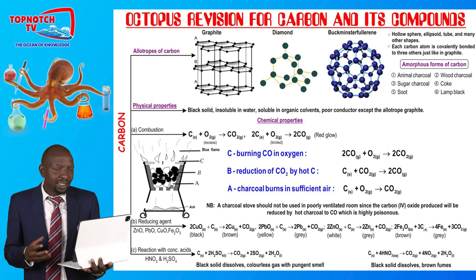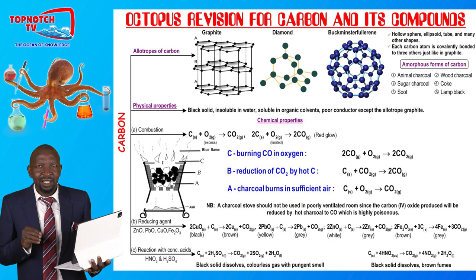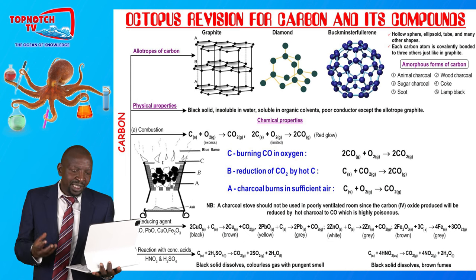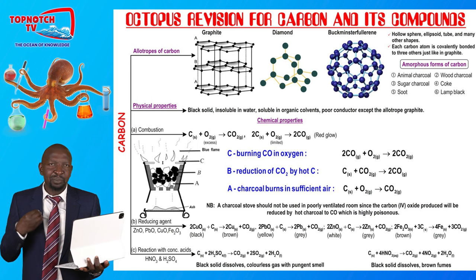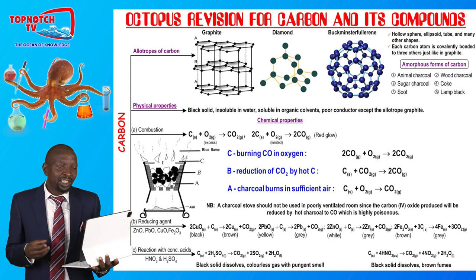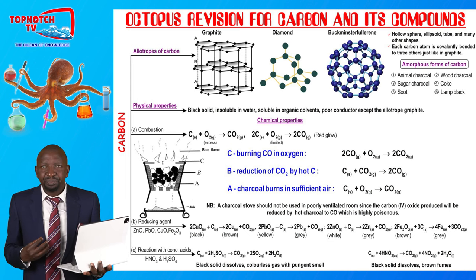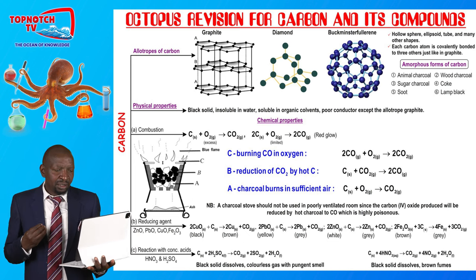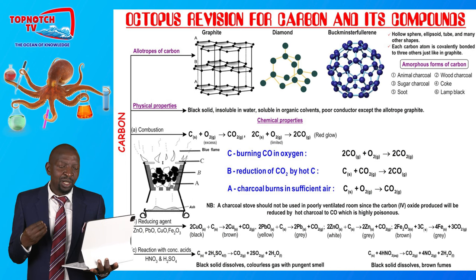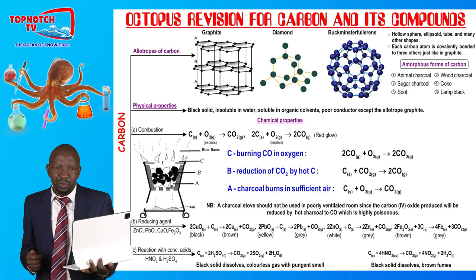The third allotrope of carbon, not covered under structure and bonding, is Buckminster Fullerene, which appears as a spherical or elliptical tube structure and many other shapes. The spherical fullerene appears like a buckyball, which is why it is called Buckminster Fullerene. Just like graphite, each carbon atom is covalently bonded to three other carbon atoms, as you can see on the diagram on screen.